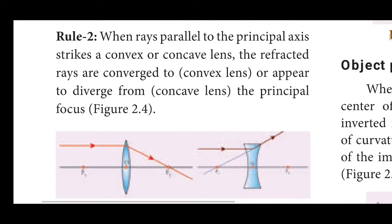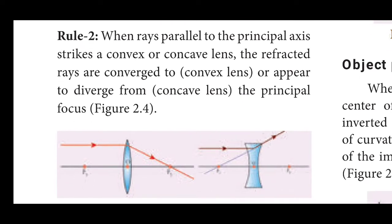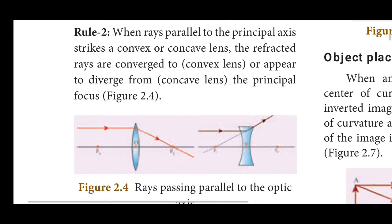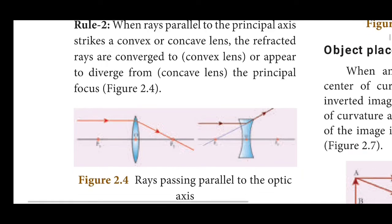Second rule: a ray traveling parallel to the principal axis — for a convex lens, the refracted ray converges to the principal focus. For a concave lens, the ray diverges, forming a virtual image. The convex lens converges rays and can form a real image.